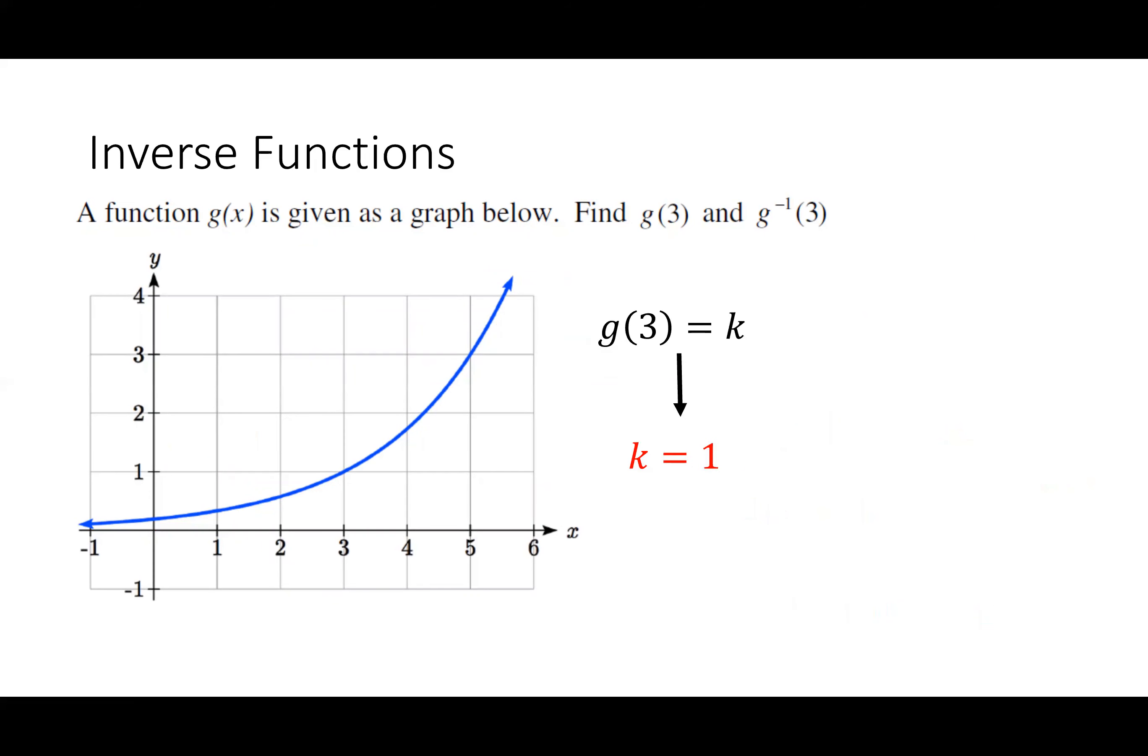So if I've got this function, it's G of X below, I want to find what G of 3 is and G inverse of 3. So for G of 3, what I'm really saying is what's the Y value when X is equal to 3? So if I drew a vertical line at 3, where am I touching the function? Well, the Y value associated with that is 1. Now G inverse of 3, that's a totally different question. What I'm saying is if I drew a horizontal line at Y equals 3, what's the corresponding X value? That corresponding X value is going to be 5.